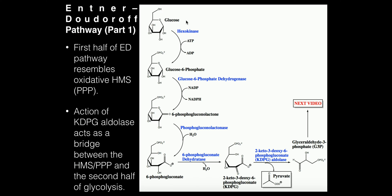In prokaryotes, the type of sugar metabolism actually varies. A lot of bacteria do possess the glycolytic pathway and the enzymes in it, but there are actually some bacteria that have an alternate pathway for deriving energy from glucose — and it's the Entner-Doudoroff pathway.